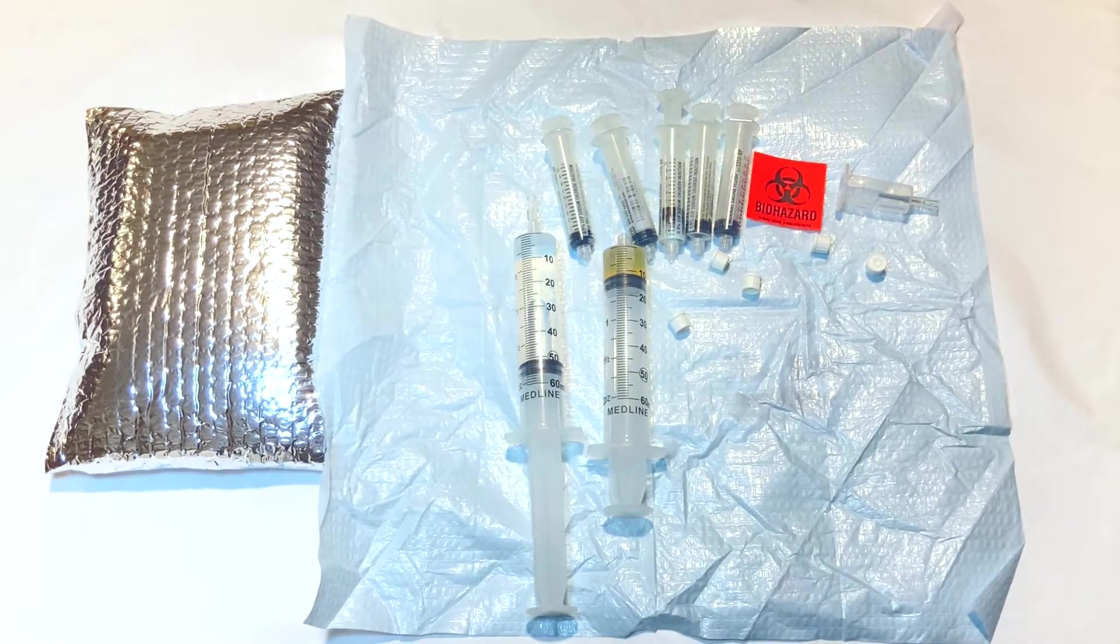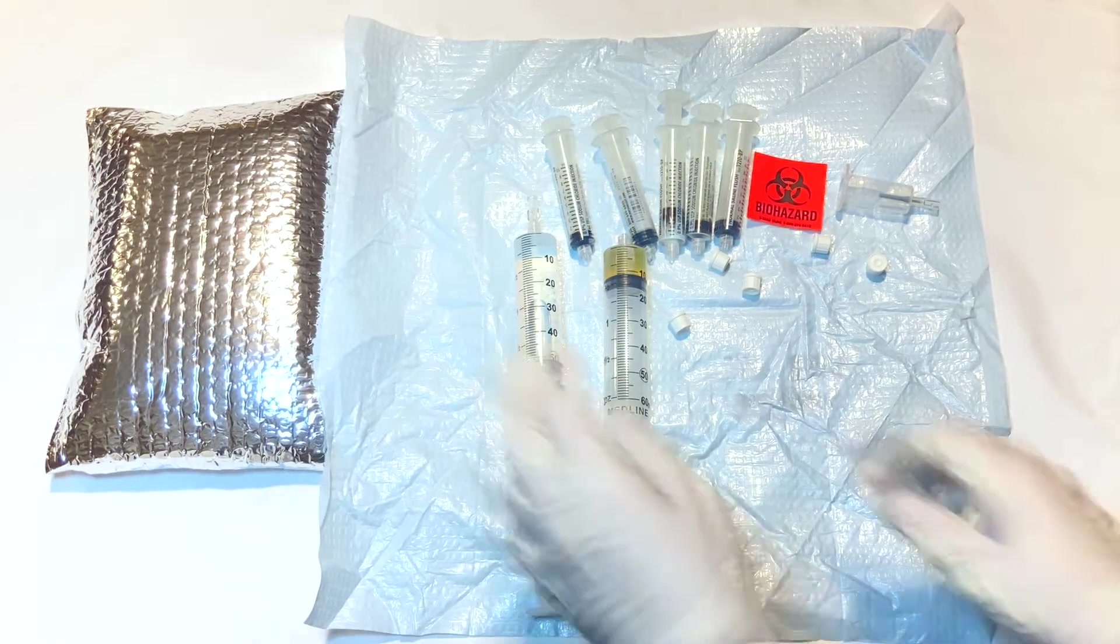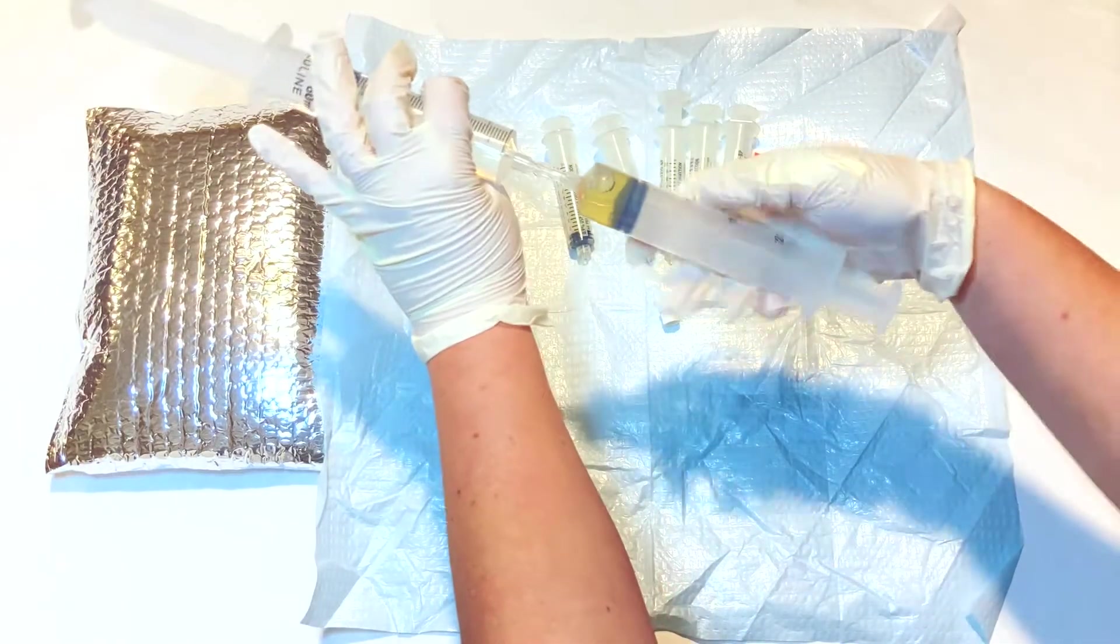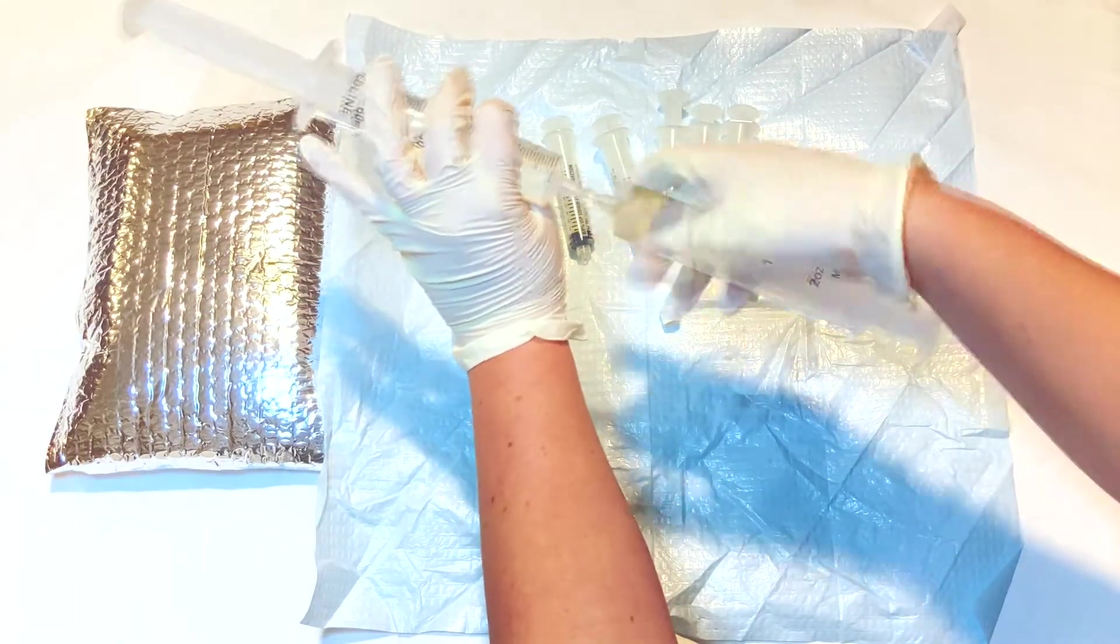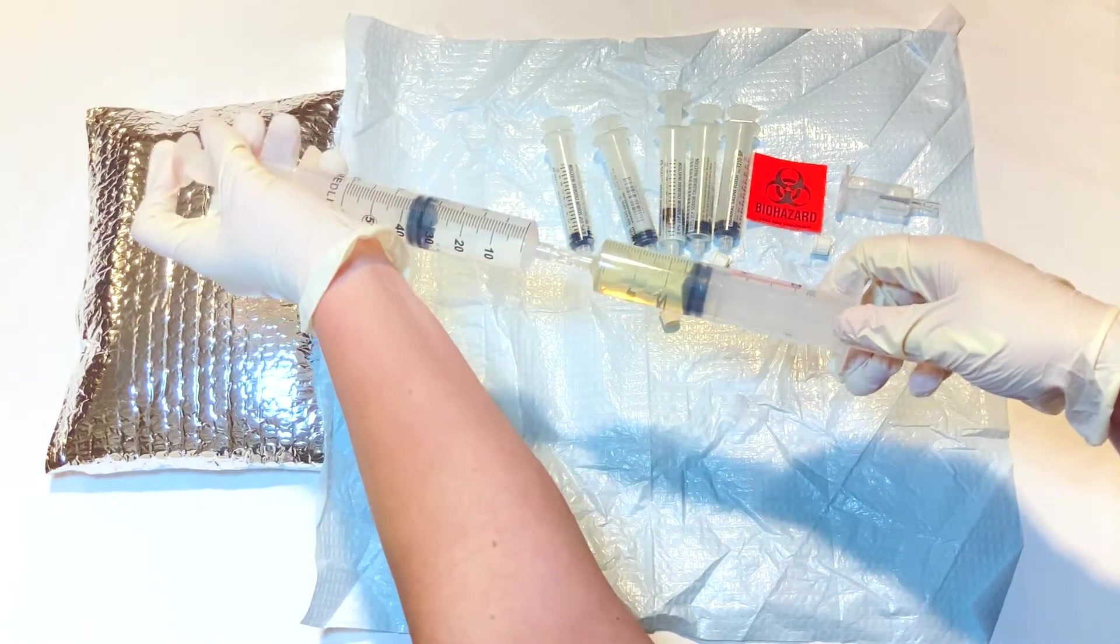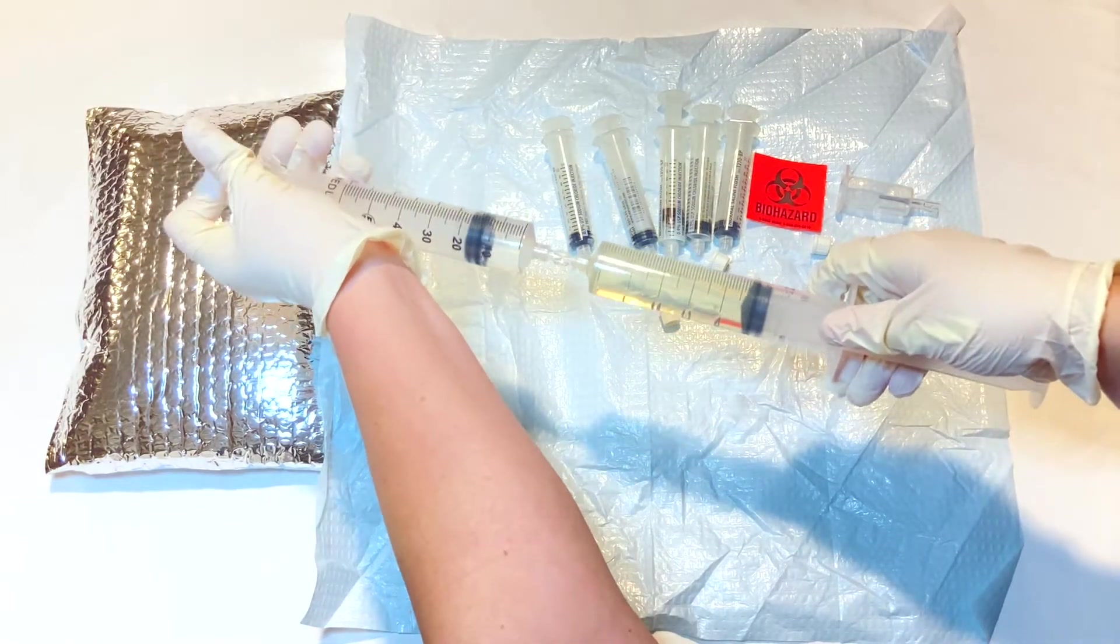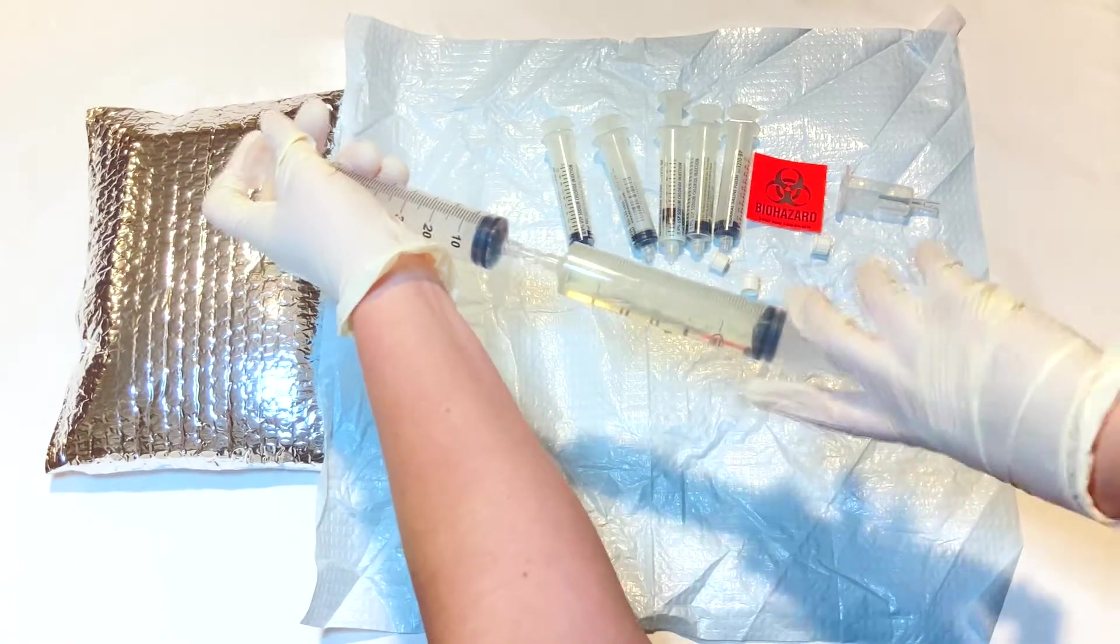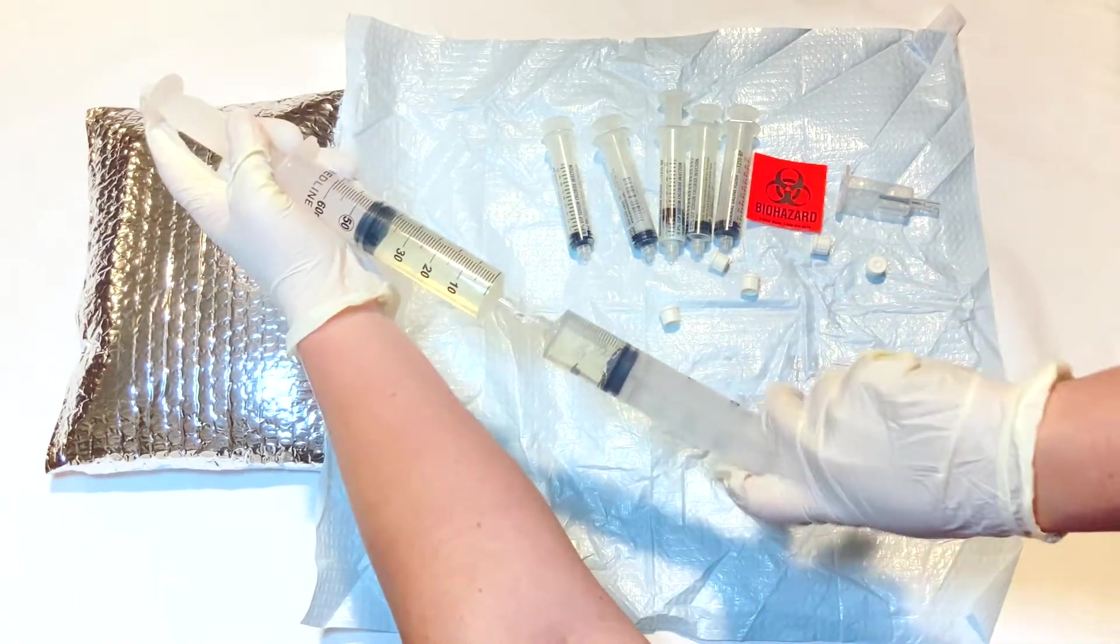Once the prescribed volume of saline is acquired, attach the 60 milliliter syringe containing the blood serum to the 60 milliliter syringe containing saline with the female-to-female luer adapter. Dispense the contents of the syringes back and forth from syringe to syringe to ensure thorough mixing of the serum and saline solution.